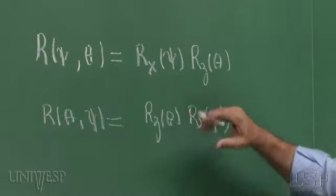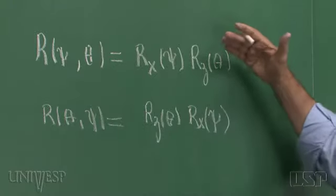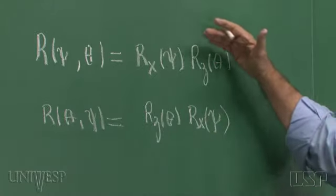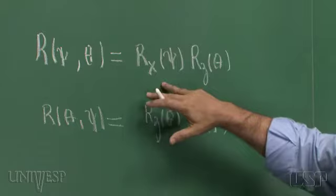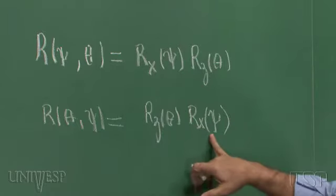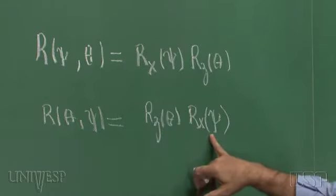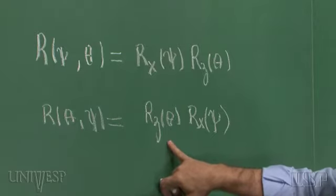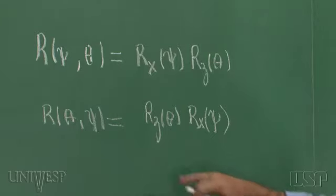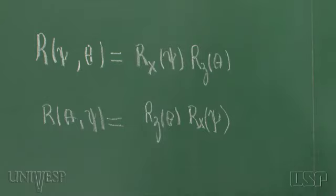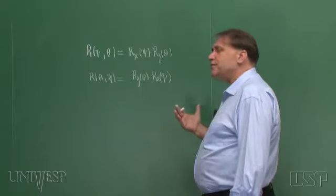Veja a diferença. Eu faço primeiro uma rotação em torno do eixo z e depois uma rotação em torno do eixo x. No outro caso, eu faço primeiro uma rotação em torno do eixo x e depois em torno do eixo z, ou z'. O fato é que o resultado é diferente.